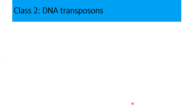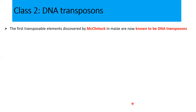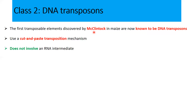Now let's look at DNA transposons, which belong to class two. These are the same elements that were discovered by Barbara McClintock in maize. They use a mechanism of cut-and-paste for their transposition, unlike class one transposons which use copy-paste. This means class two elements do not involve an RNA intermediate, and the process of transposition is catalyzed by transposase enzymes.